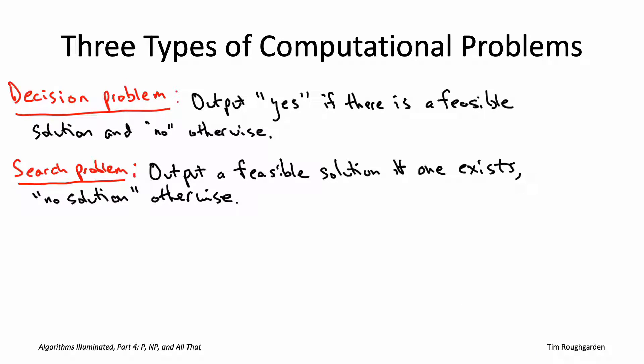The majority of the problems that we've discussed in this video playlist are optimization problems. An algorithm for an optimization problem is responsible not just for figuring out whether there's a feasible solution, but if there is at least one feasible solution, it's responsible for handing back the best one.